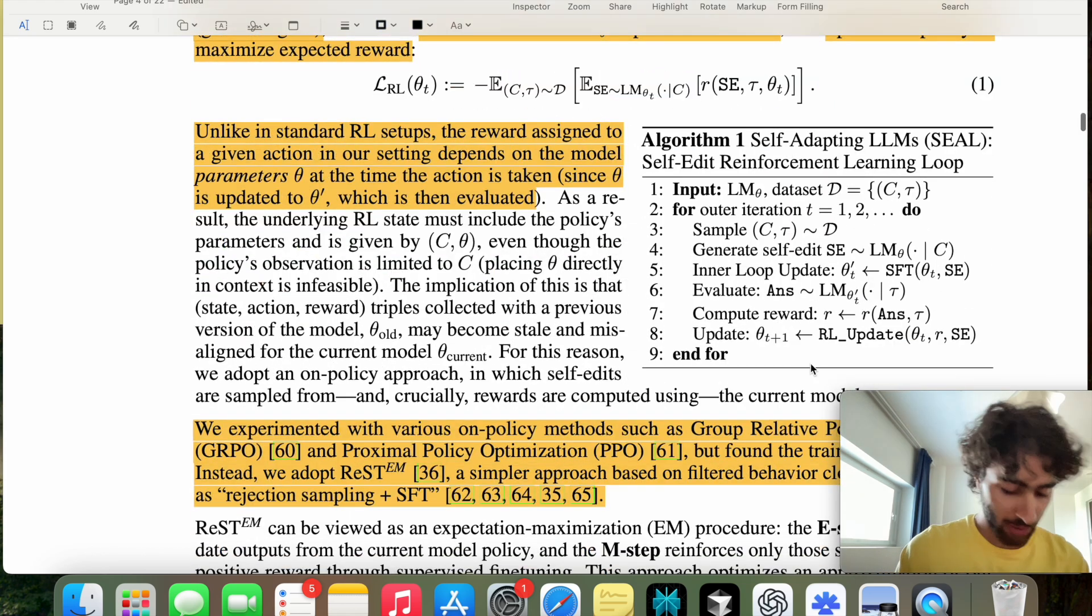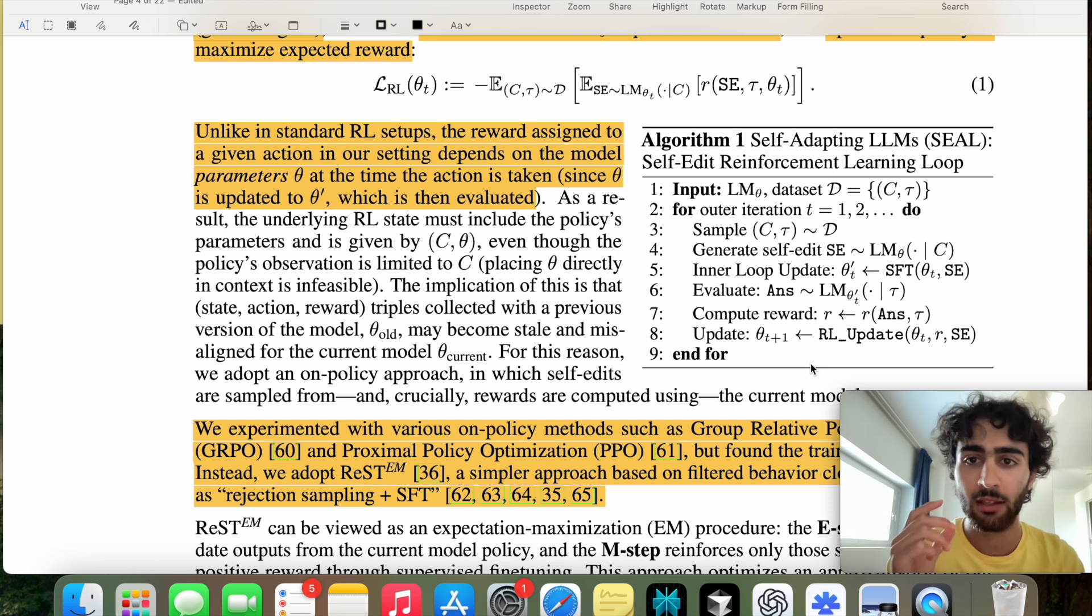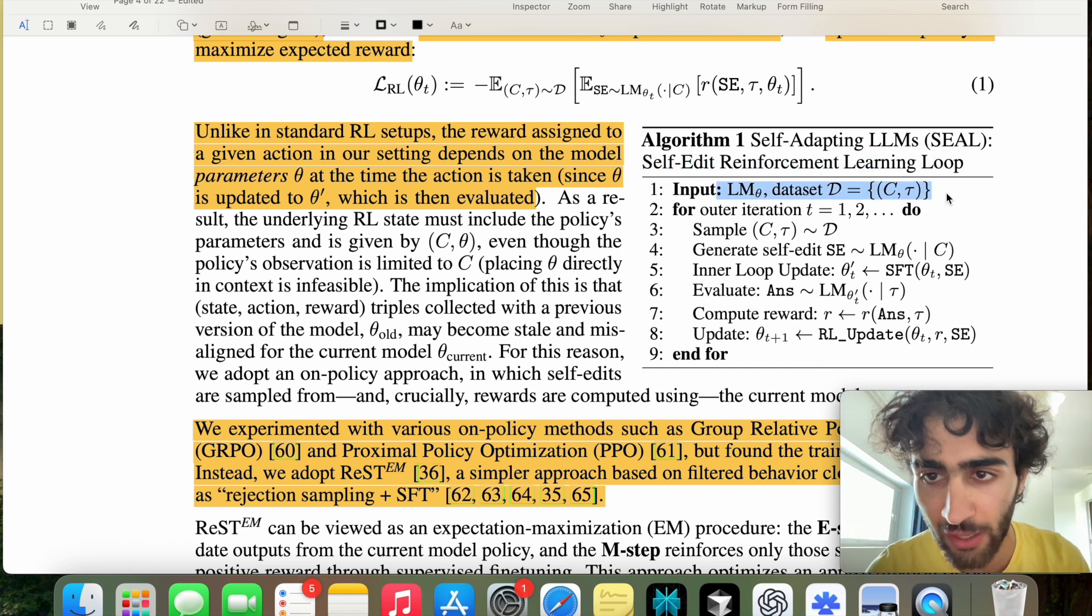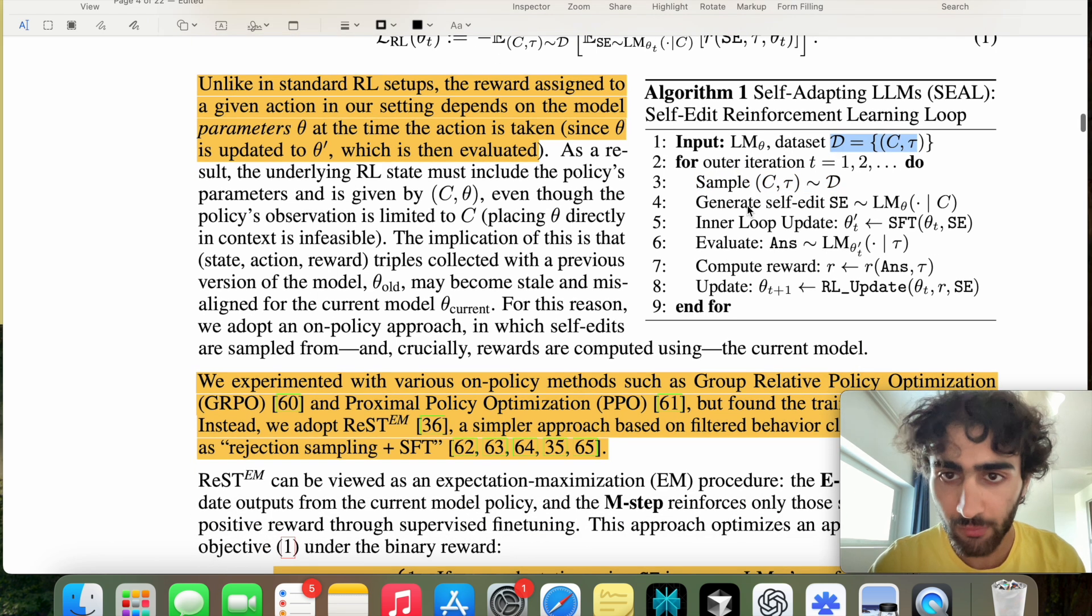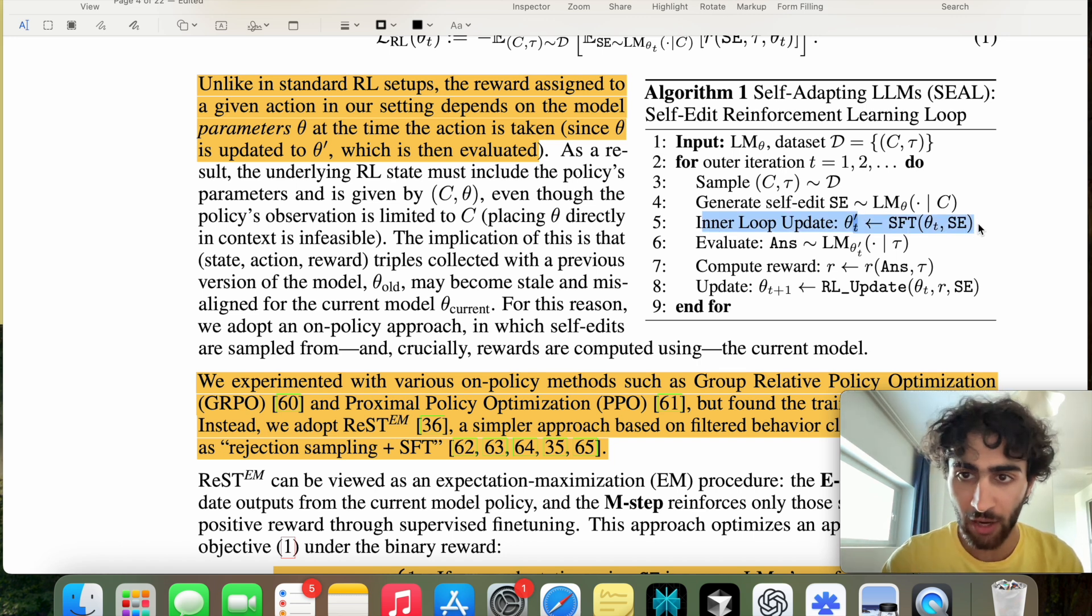Let's go through this algorithm one, because hopefully this will allow you to better understand the process itself. So we have our large language model and our dataset with the context and the ground truth tau. Then we do T iterations where we sample from this dataset, and then we generate a self-edit, multiple self-edits. And then in our inner loop, we will fine-tune our model using a LoRa adapter head on these self-edits to see if it will improve the model's performance on that task.